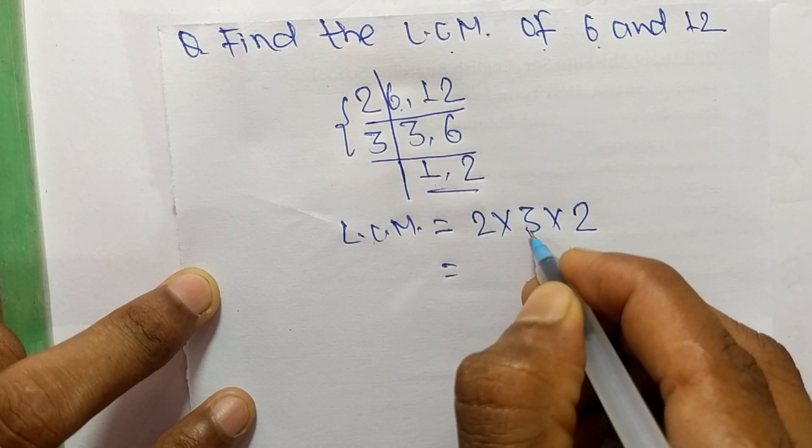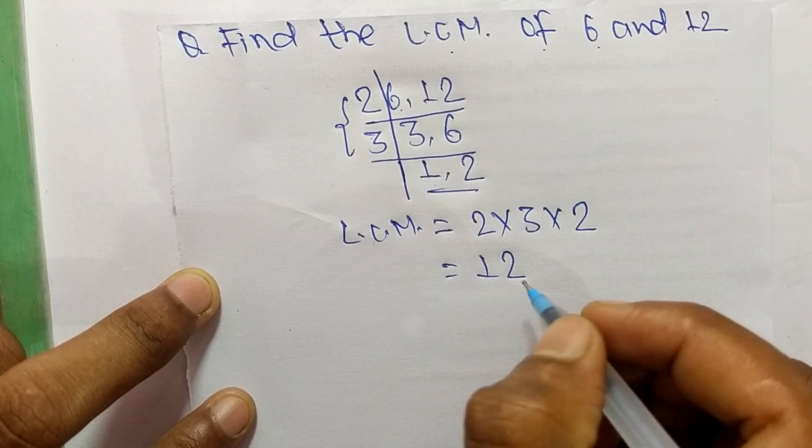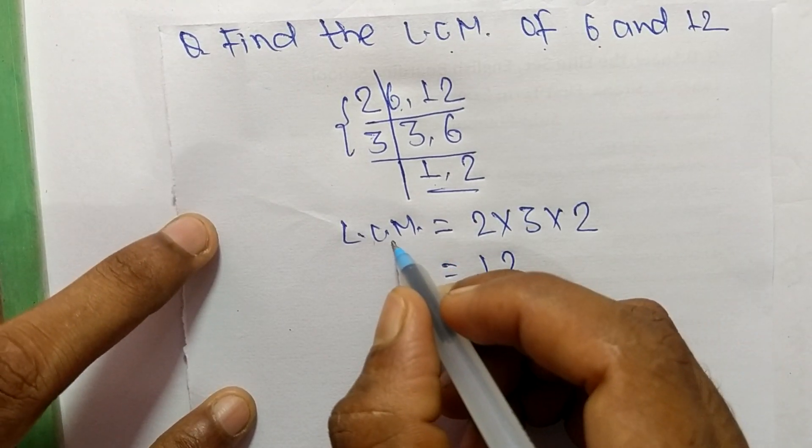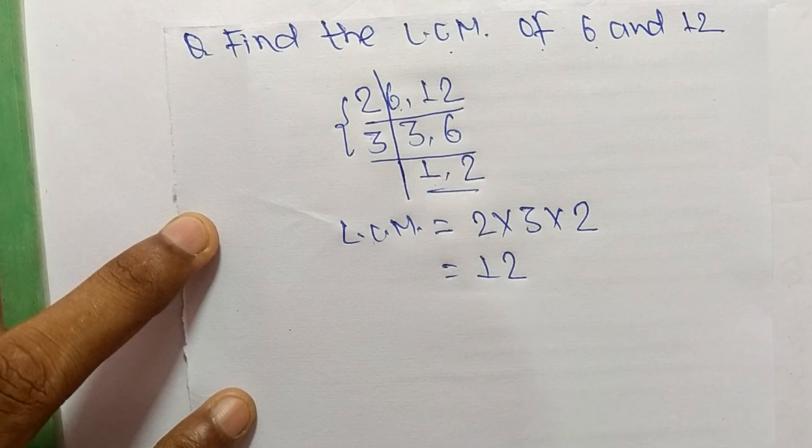So 2 times 3 means 6, and 6 times 2 means 12. So 12 is the LCM of 6 and 12. So this much for today, and thanks for watching.